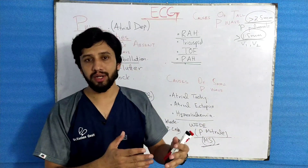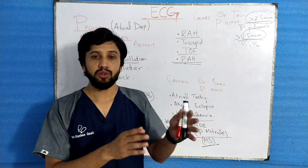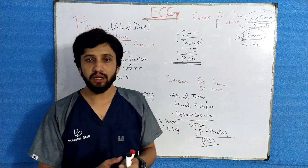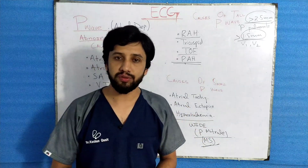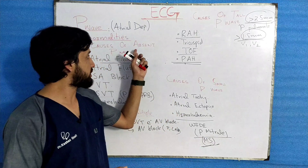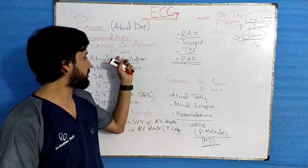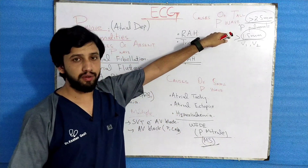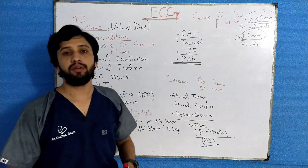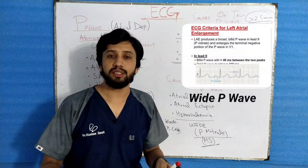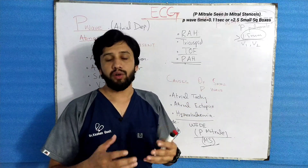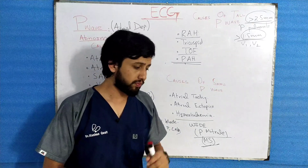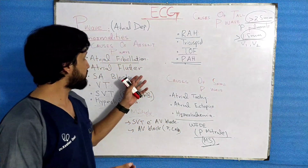Today we will discuss those abnormalities in detail, starting from number one: the absent P wave. Number two is the tall P wave, then we will discuss the small P wave, likewise wide P wave, inverted P wave, and variable P waves.